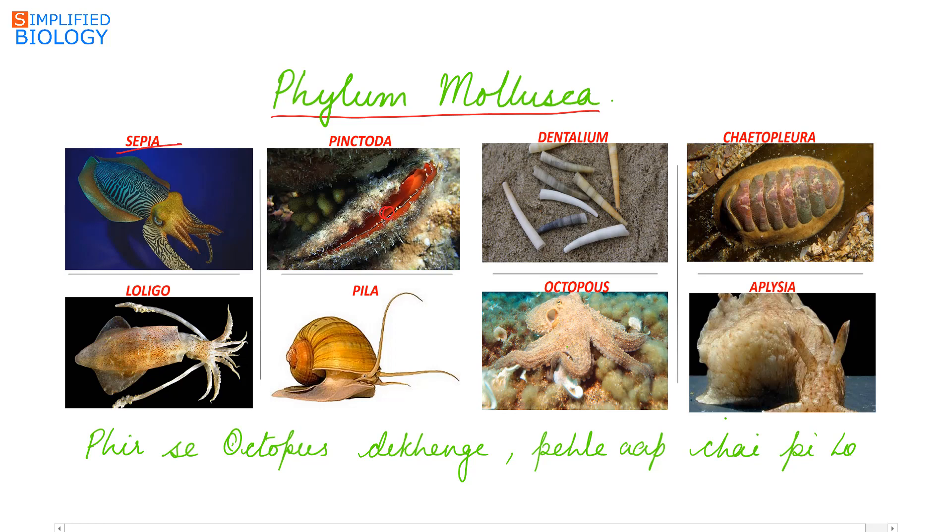Sepia, that is your cuttlefish. Pintoda is your pearl oyster, we get pearls from this. Dentalium, the tusk shell that resembles the elephant tusk. Chiton flora, that is chiton. Lolligo, the squid. Pila, the apple snail. Octopus, and Aplysia, that is your sea hare.